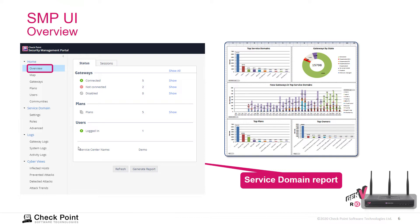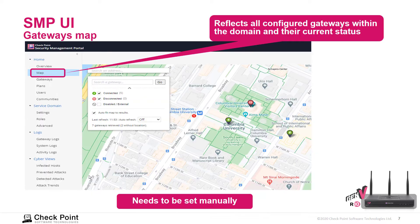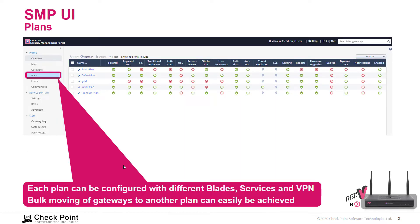We can generate reports, and the screenshot on the right is an example of one of those reports. We also have a map that shows where your SMP appliances are deployed. If you have multiple appliances in the same area, they will show up with a number associated with them. All configured gateways within the domain and their current status will appear here as well.